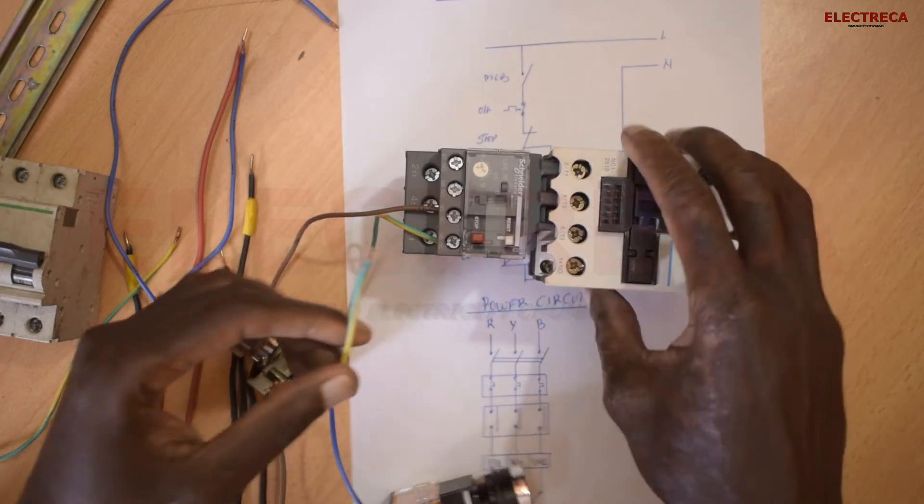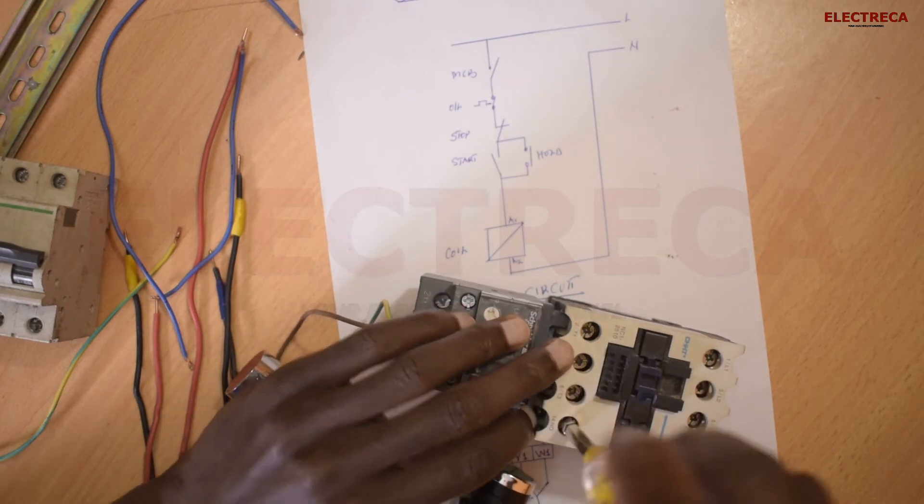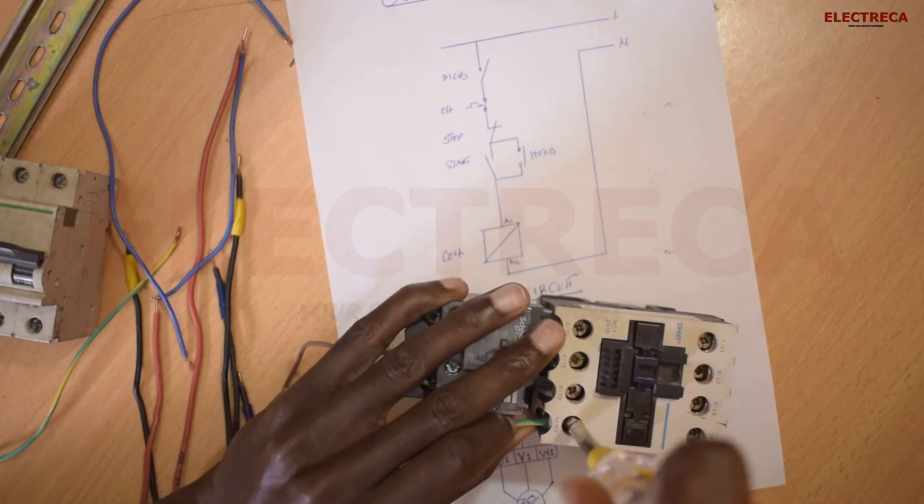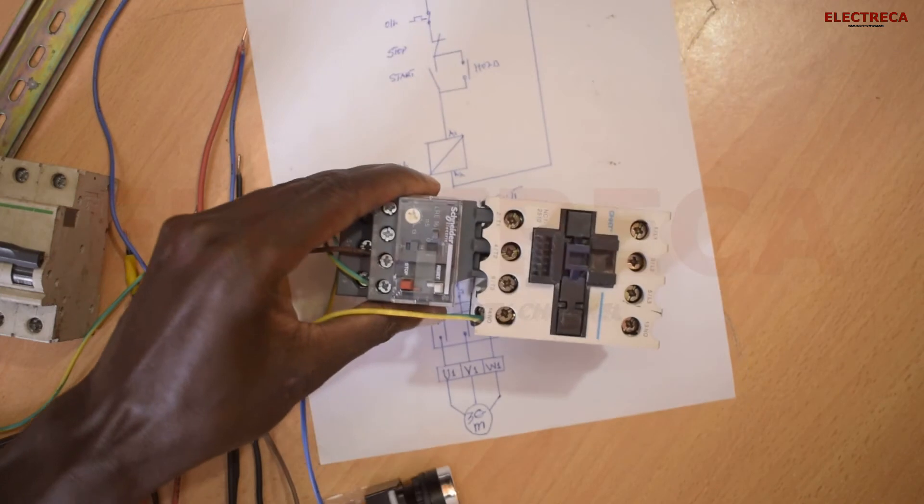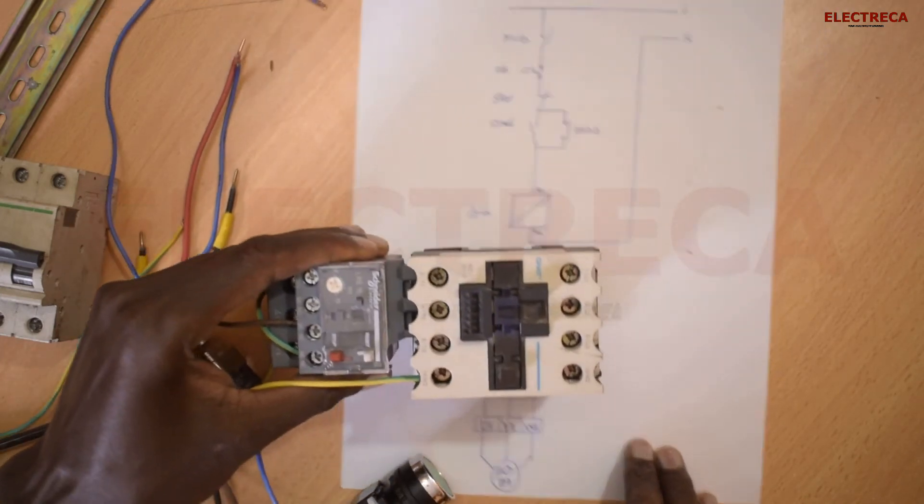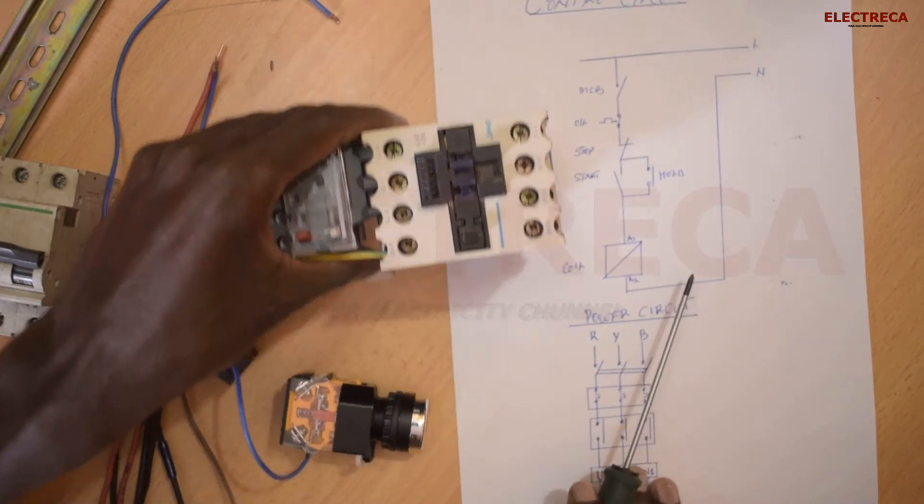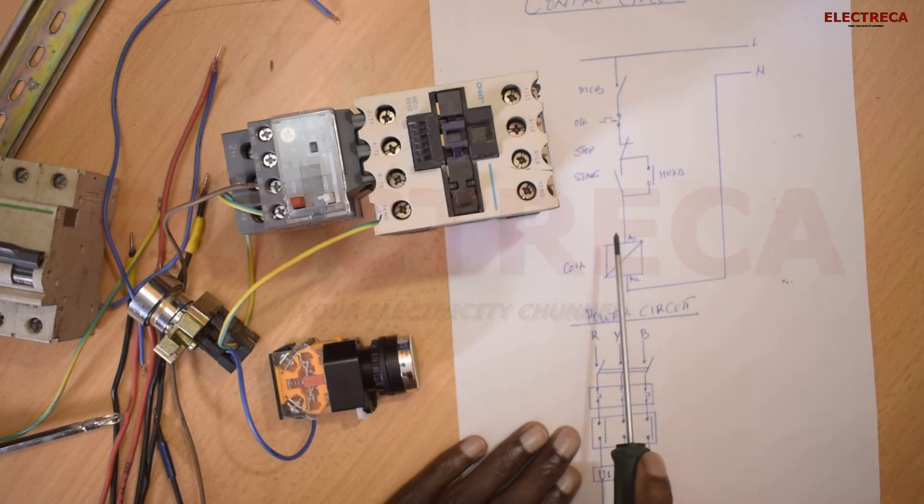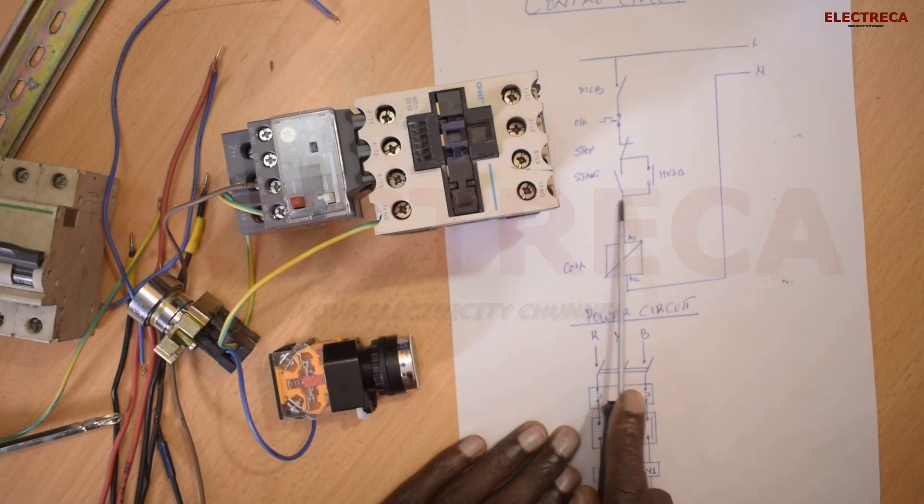Now we have this wire here that goes into this. Now what we are going to do is let us hook this - we must put our overload to our motor. This cable here, this cable here we can put it here.